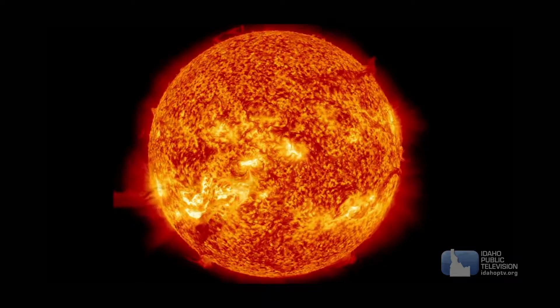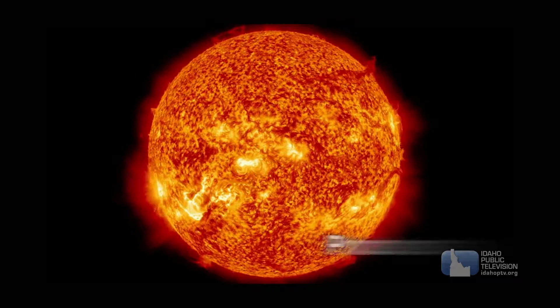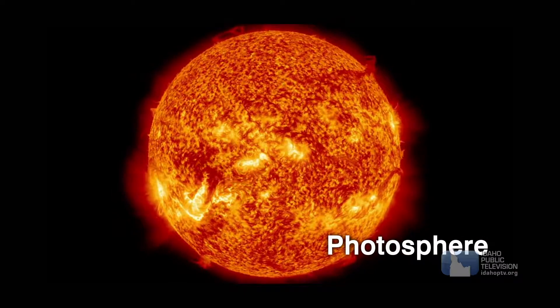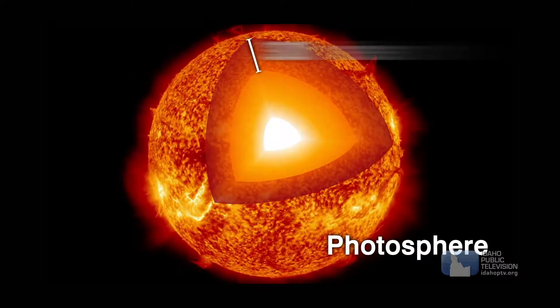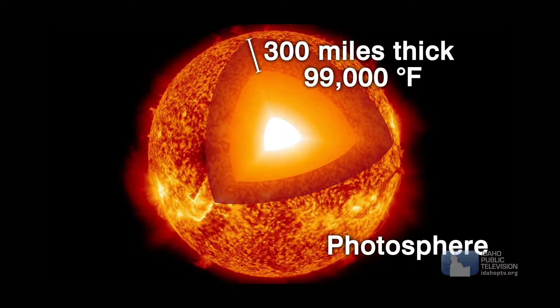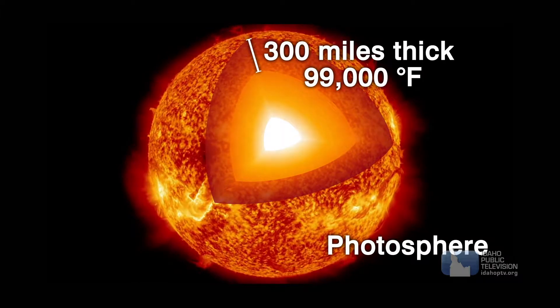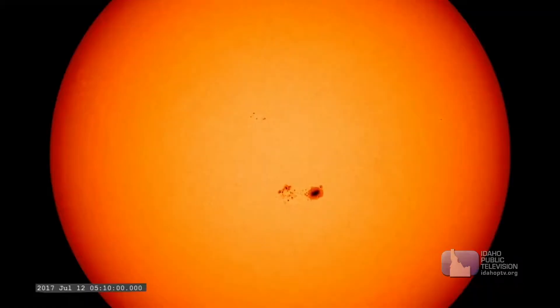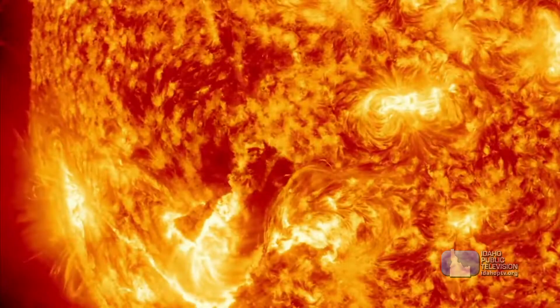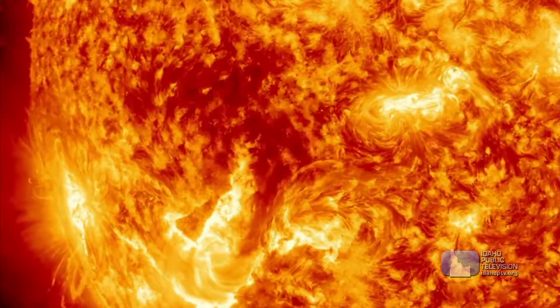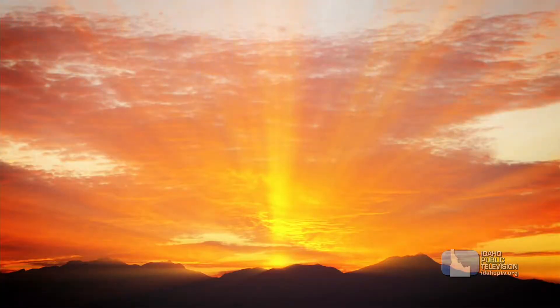That energy is transferred outward to the surface of the sun, or the photosphere. This layer is about 300 miles thick and has a temperature of about 99,000 degrees Fahrenheit. Sometimes we can see dark patches on this layer of the sun. They're called sunspots. In close-up pictures, the photosphere looks like it's moving and boiling. But we on Earth experience all that energy as sunshine.